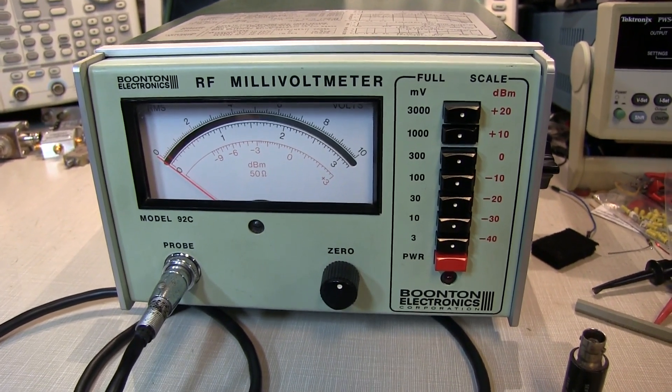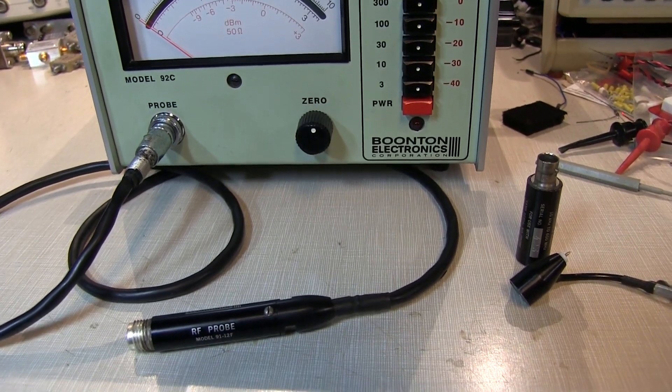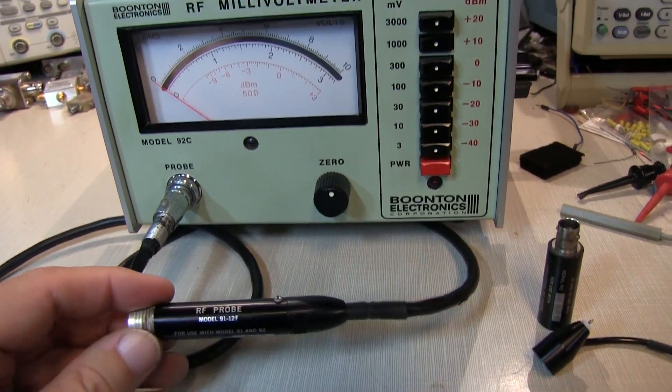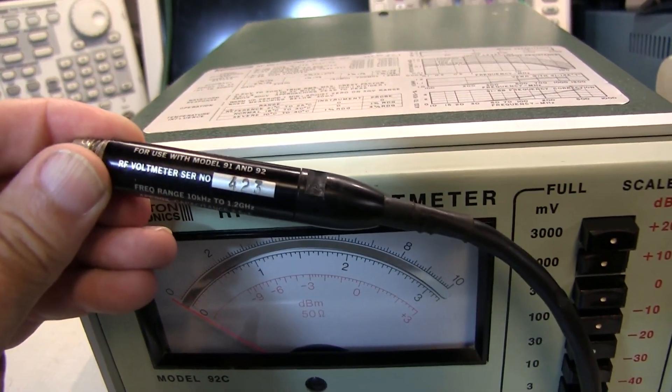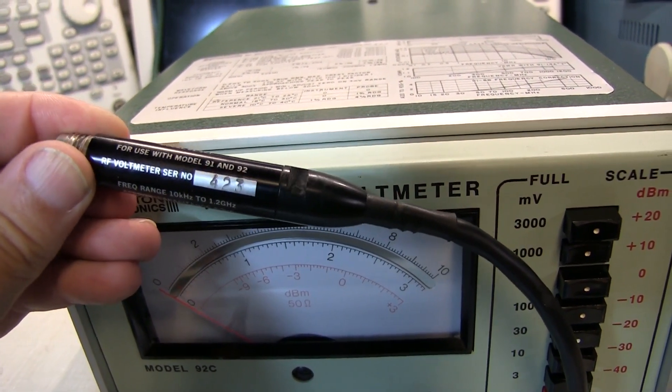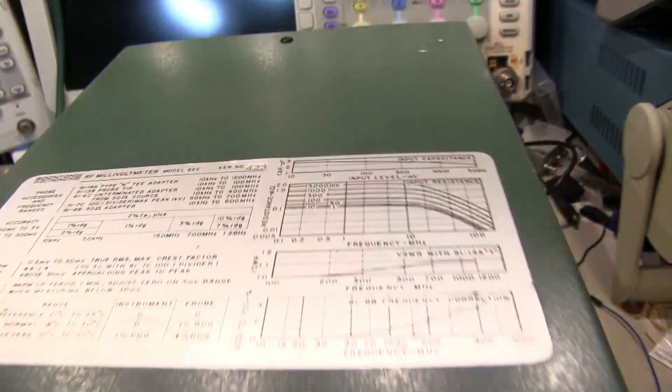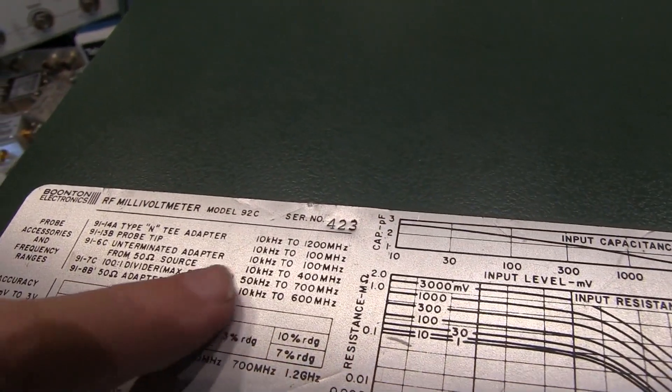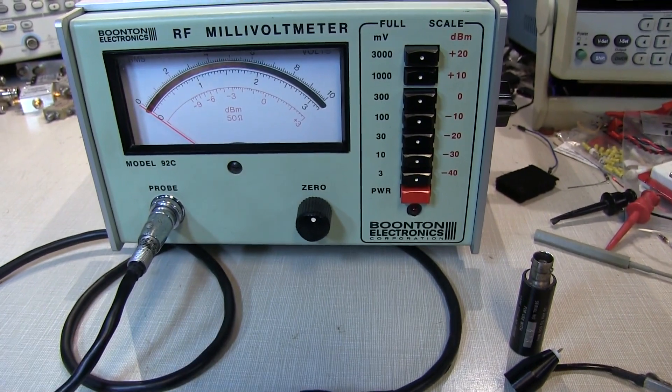Now if you're going to look for one of these meters, you really want to look for one that comes with the original probes, and the reason for that is that the probe and the meter were calibrated together. If we look at this probe, you might be able to see that it says this probe was calibrated for serial number unit 423, and if we look at the top label of the meter itself, serial number 423. So this is the original probe that came with this meter, and that's a really nice find.